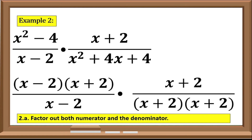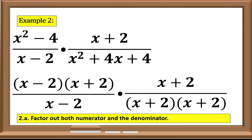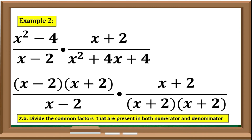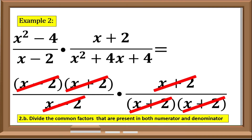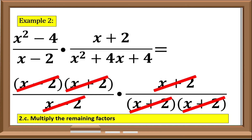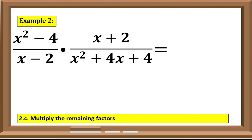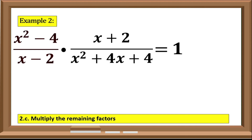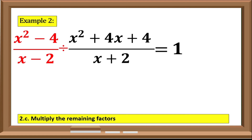Since we are done factoring both numerator and denominator, next we divide the common factors present in both numerator and denominator — in this case we have (x - 2), (x + 2), and another (x + 2). The last step: multiply the remaining factors. Since we divided all expressions by themselves, we use the division-by-itself property, which states that dividing a number or expression by itself gives a quotient of 1. Therefore, the quotient is 1.